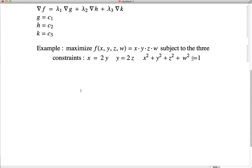Okay, so let's go through an example quickly here. So here's the function we're going to maximize, x times y times z times w, and here are the three constraints. x equals two times y, y equals two times z, and x squared plus y squared plus z squared plus w squared equals one.